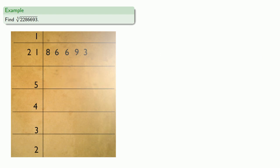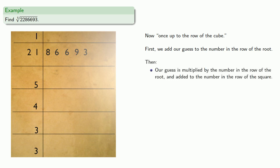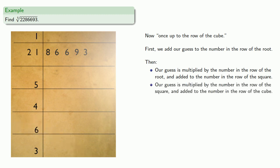But we're not done. We're going to go once up to the row of the cube. So again, we add our guess to the number in the row of the root. Then guess times the number in the row of the root is added to the number in the row of the square. Then guess times the number in the row of the square is added to the number in the row of the cube.